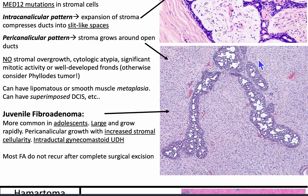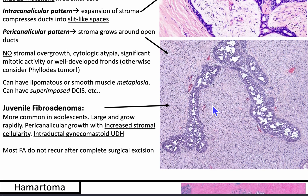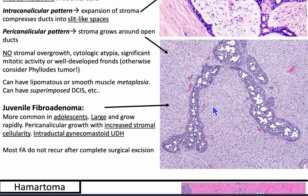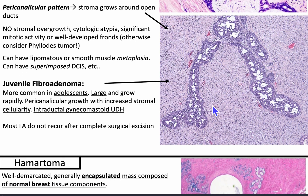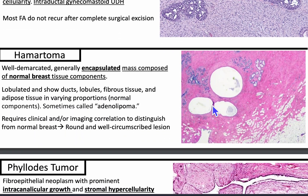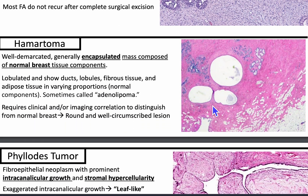Juvenile fibroadenomas are more common in adolescence. They are large and, unlike typical fibroadenomas, they are rapidly growing. They have pericanalicular growth with increased stromal cellularity and introductory gynecomastoid UDH. Most fibroadenomas don't recur after complete surgical excision.